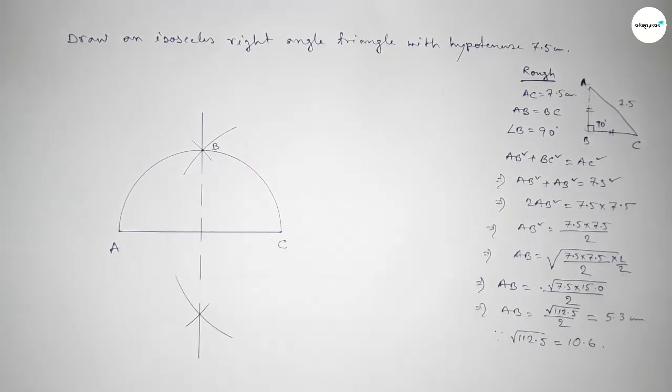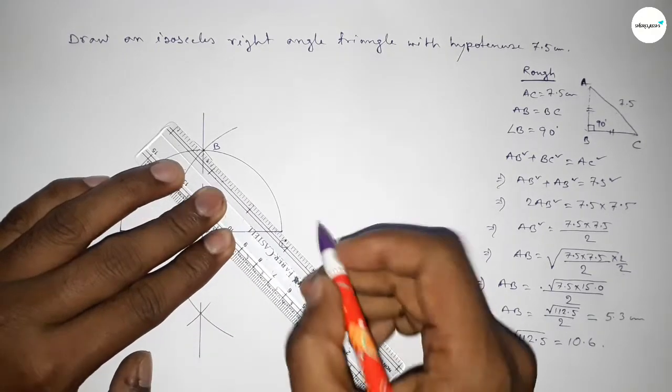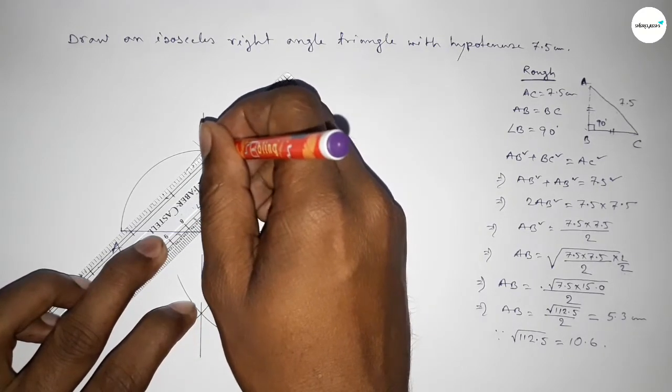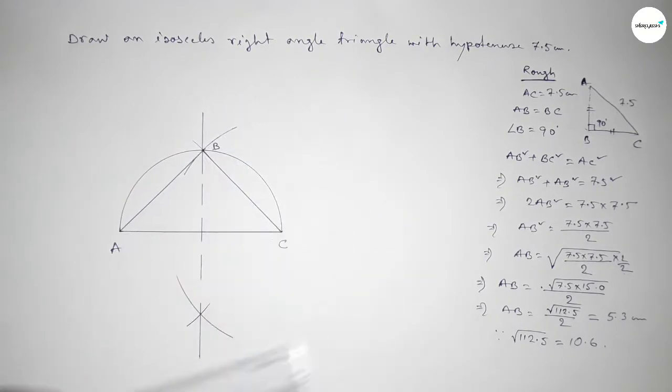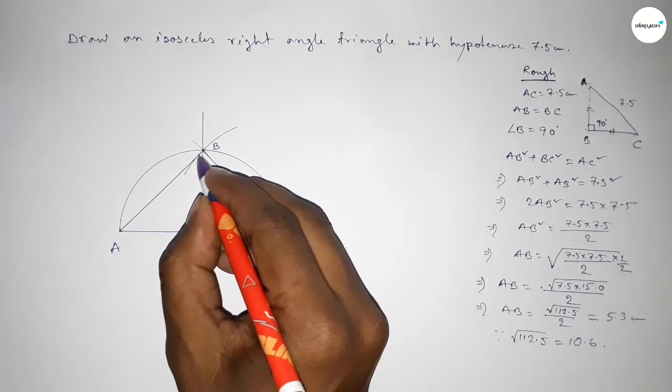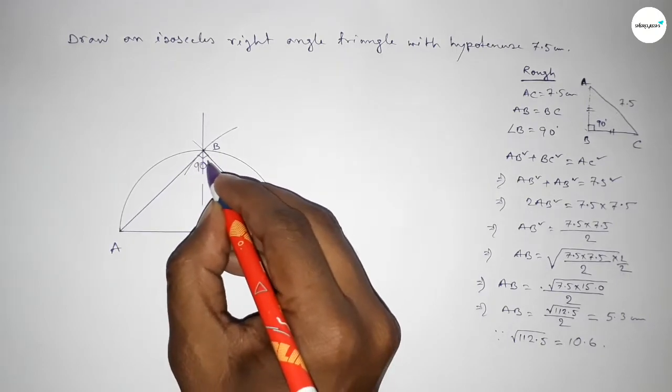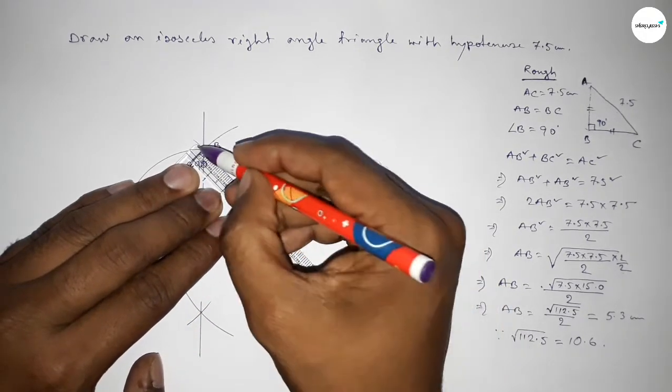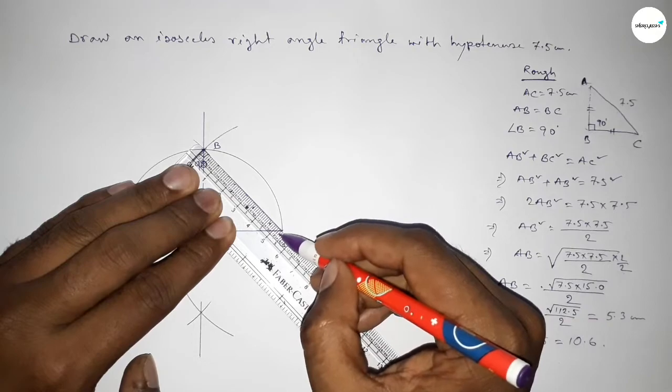Now first joining B and C, then joining A and B to get the triangle ABC. And we know that the angle in a semicircle is always 90 degrees, so this is 90 degrees. Now checking the side equal or not, so BC...